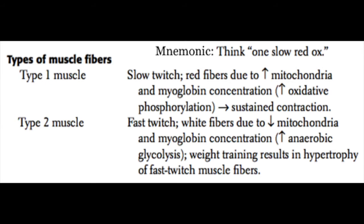Type 1 fibers are red because they have a lot of mitochondria and myoglobin — they are designed for long-term aerobic exercise with a lot of oxidative phosphorylation, used for activities like distance running. Type 2 muscle fibers are fast twitch, appearing white due to low mitochondria and very little myoglobin. They are good for anaerobic exercise such as weight lifting or sprinting, involve a lot of glycolysis, and are the fibers that hypertrophy and get larger with weight training.